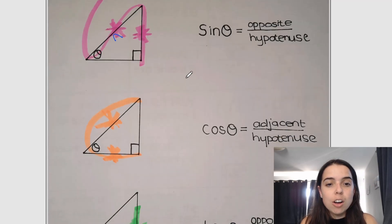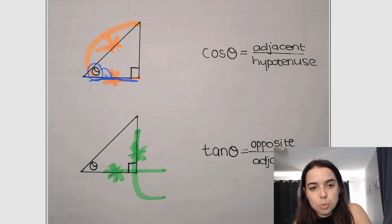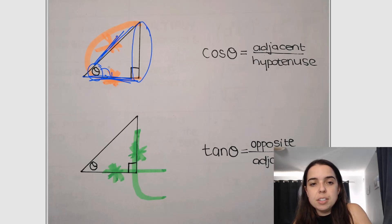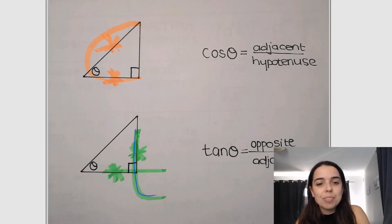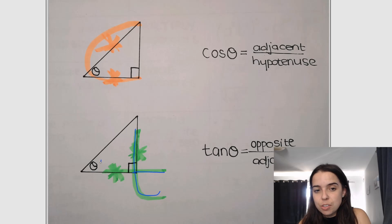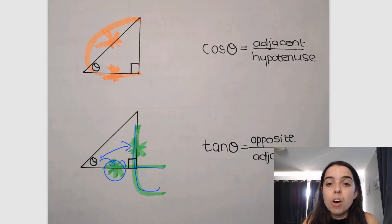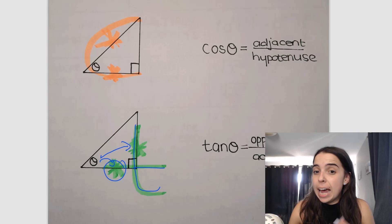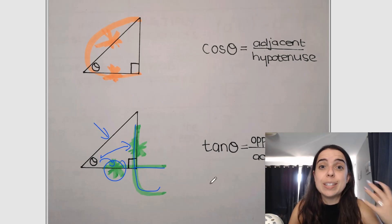Then we've got cos — adjacent over hypotenuse. If you're looking for cos of this angle, you use the adjacent side and the hypotenuse; we don't use the opposite side because cos does not want opposite. Then we've got tan, which is opposite over adjacent. For tan, we ignore the hypotenuse completely because tan doesn't care about the hypotenuse.